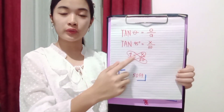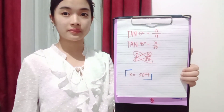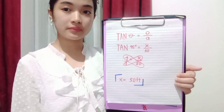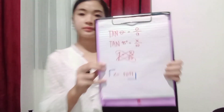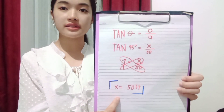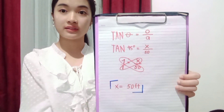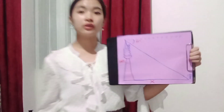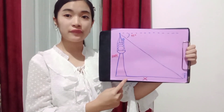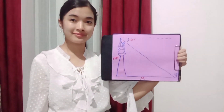Pero mas maganda pong may scientific calculator para hindi na po kayo mahirapan. Ang tan 45 po is 1. So, 1 is equal to X over 50. Ang hinahanap po natin ay ang X. Para makuha na natin yung X, ang gagawin natin is cross-multiply. Ano nga bang denominator ng 1? Diba pag may whole number, ang denominator ay 1? So, i-cross-multiply na natin. X times 1 is equal to X. 1 times 50 is equal to 50. So, the answer is X equals 50 feet. Ang sagot natin dito ay ang layo ng partner niya sa tower is 50 feet.